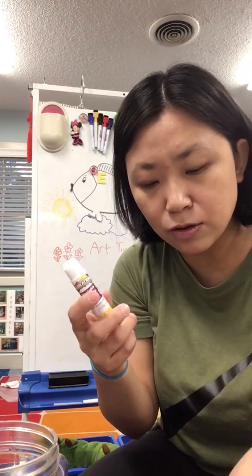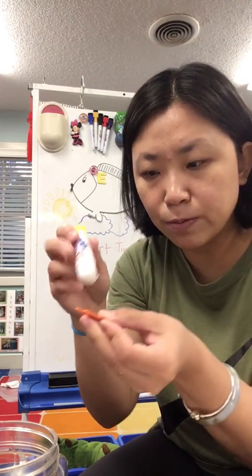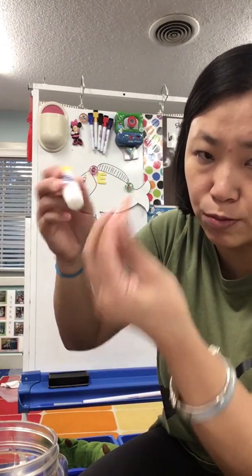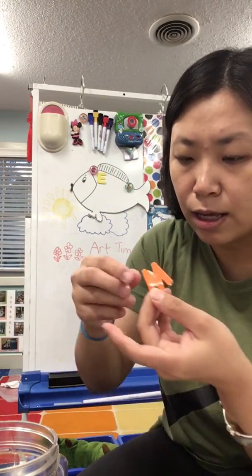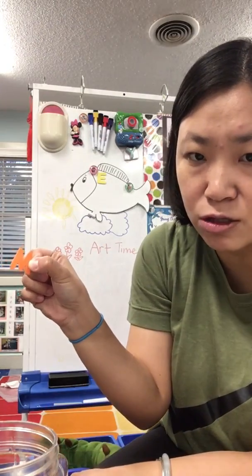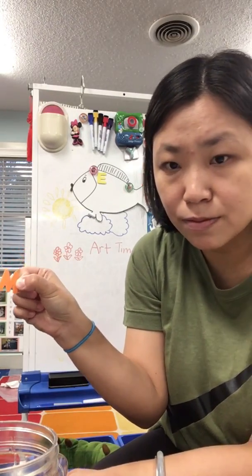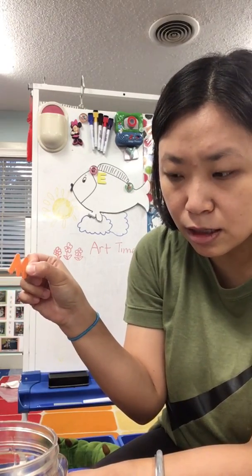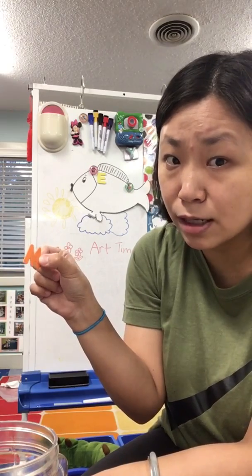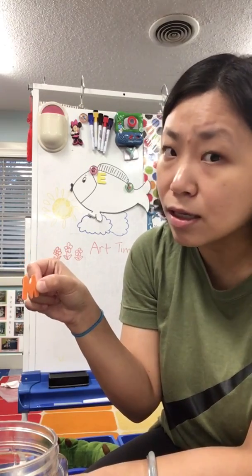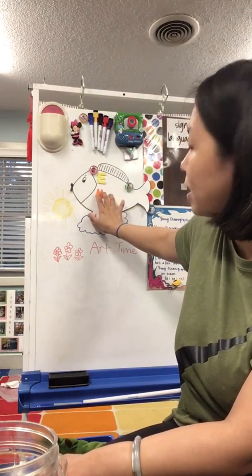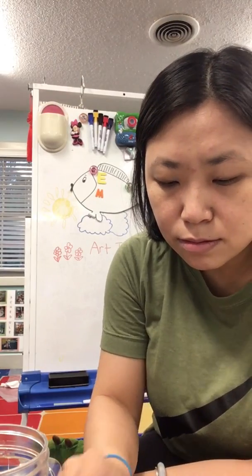Put some glue on the back of the letter — make sure you put a lot of glue — and then glue this letter on your fish. What letter is this? You are right, this is letter M! Can you think of a word that starts with letter M? What about monkeys! So let's put letter M on the fish.